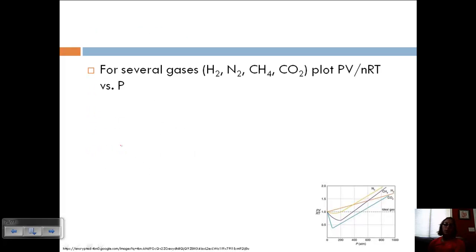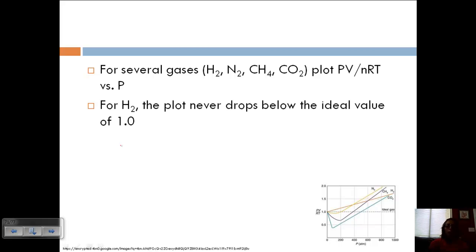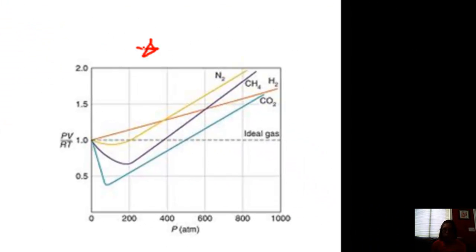So let's take a look. So for several gases, H2, N2, methane and carbon dioxide, we can plot PV over NRT versus pressure. So for hydrogen, the plot will never drop below the ideal value of one. So take a look at the drawing down here or the graph. Here's our PV over RT over our pressure. So here's our ideal gas at a value, member PV equals NRT was equal to one. And so you can see that the hydrogen never goes below that one value, whereas our other gases, they dip down and then come back up.